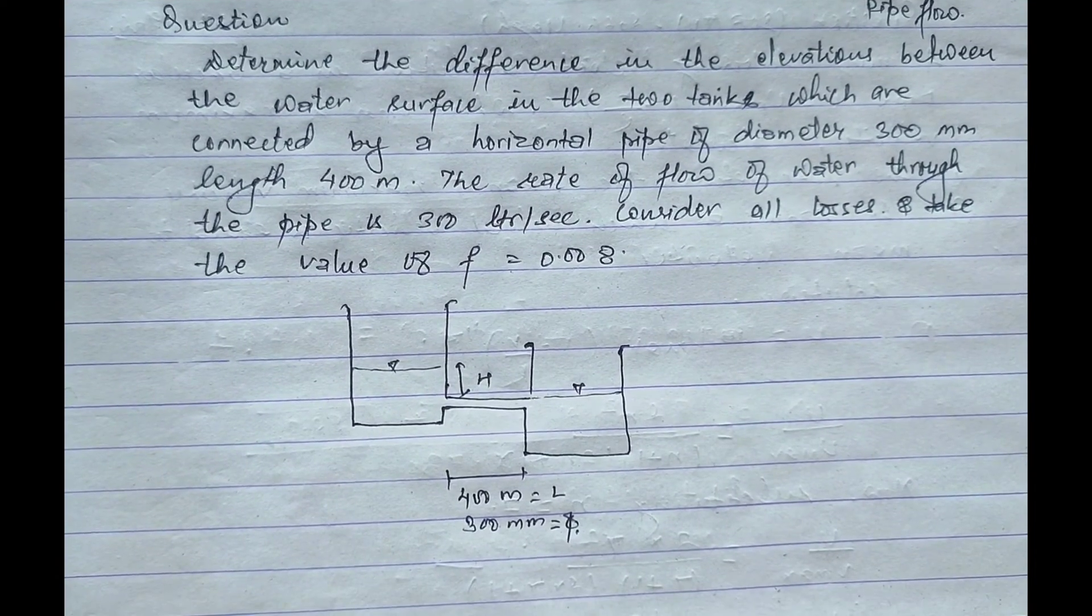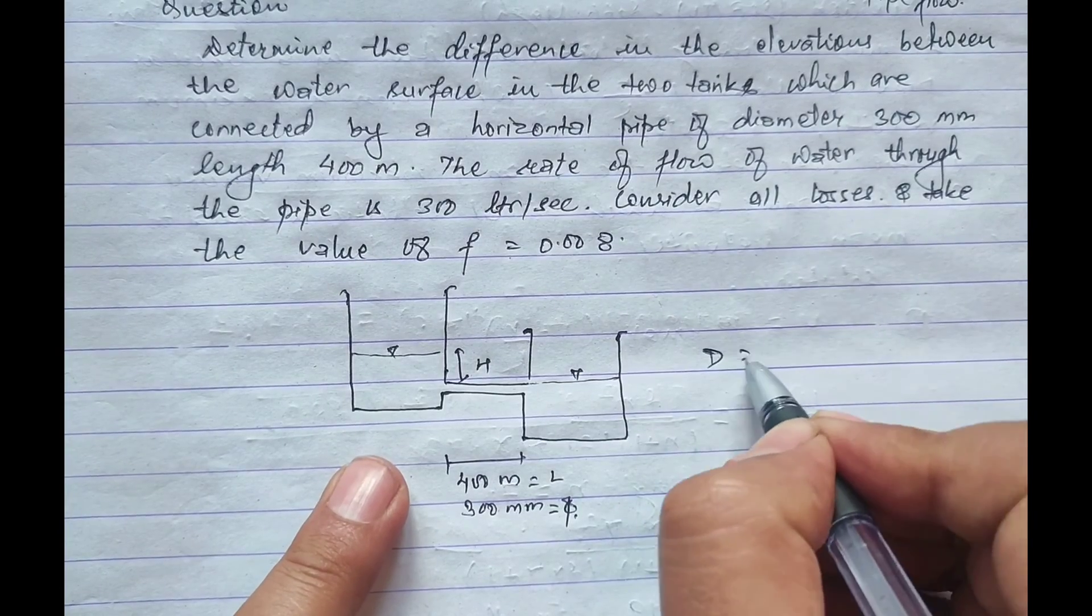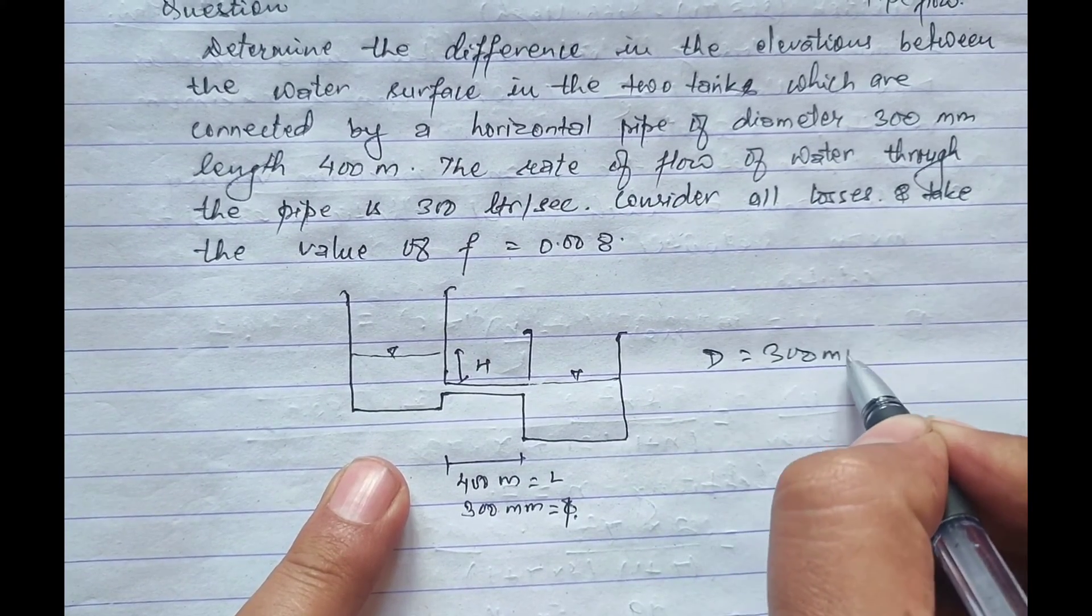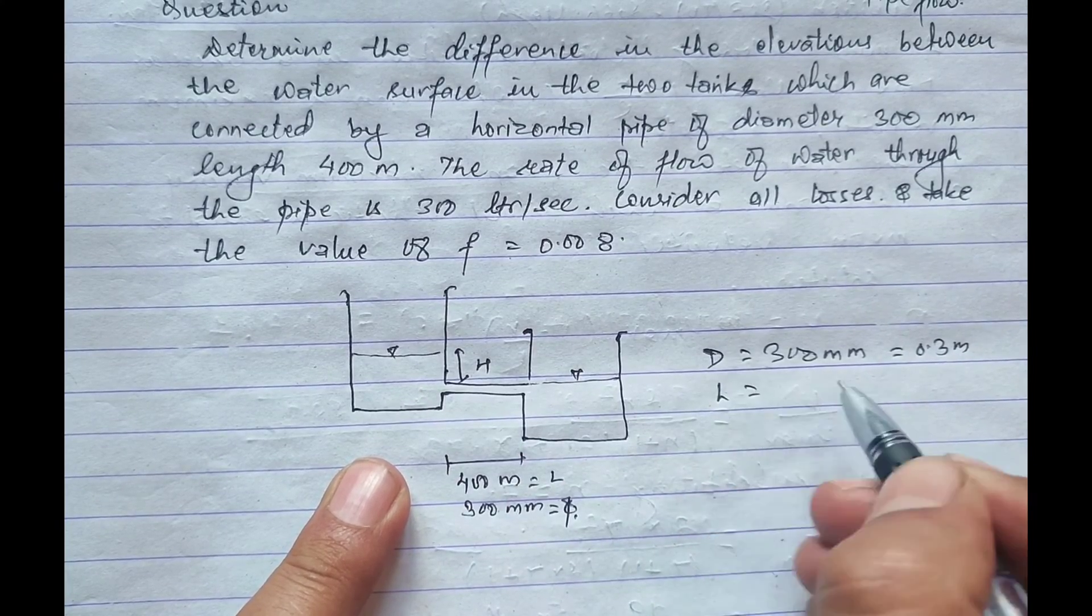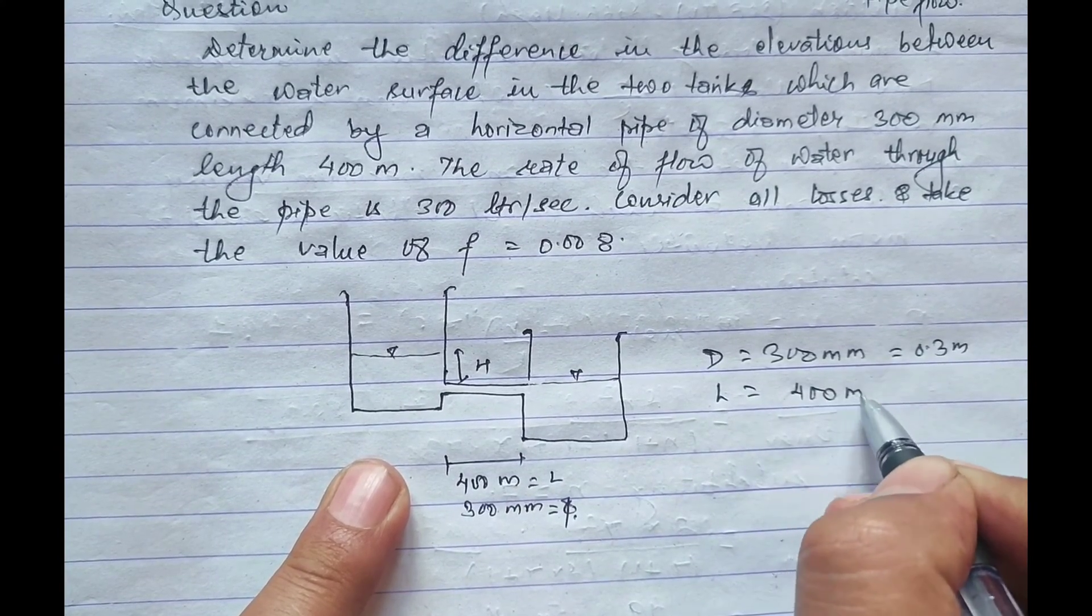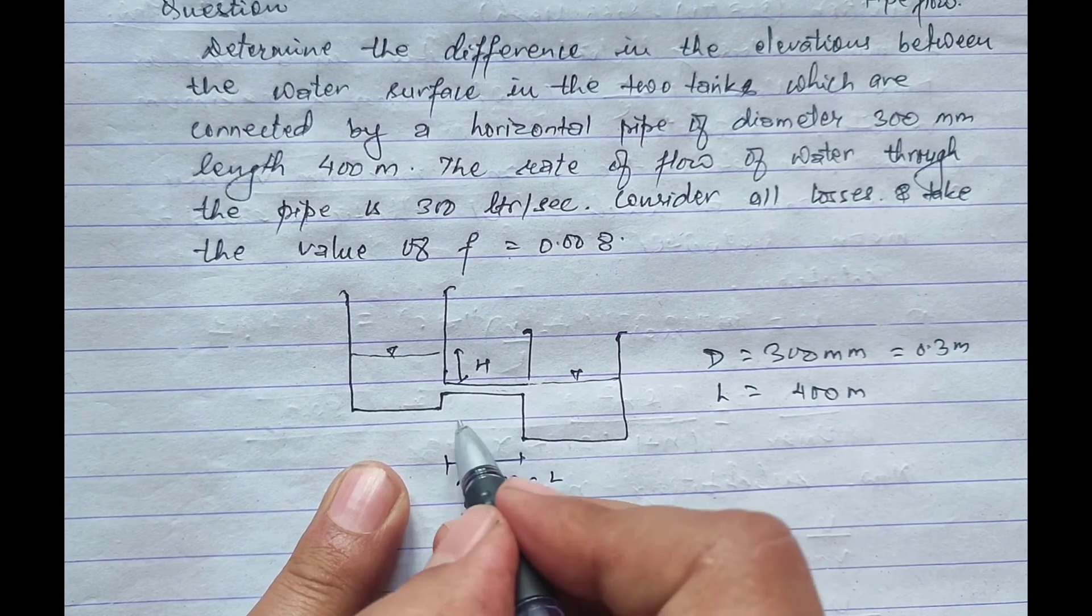Now in this question, the given data is: diameter of the pipe d equals 300 mm which is equals to 0.3 meter, length of this pipe L equals 400 meter.